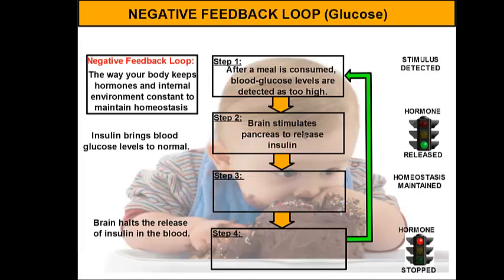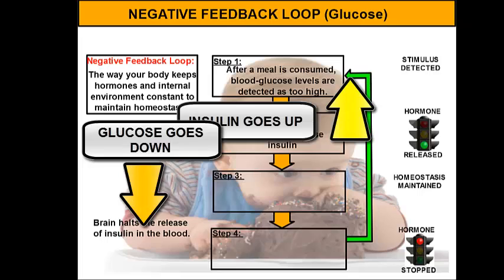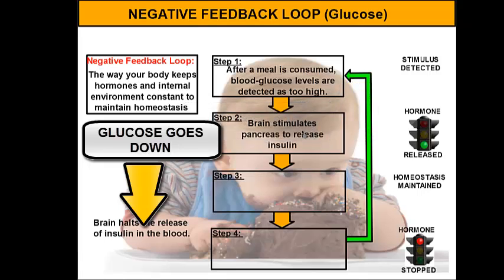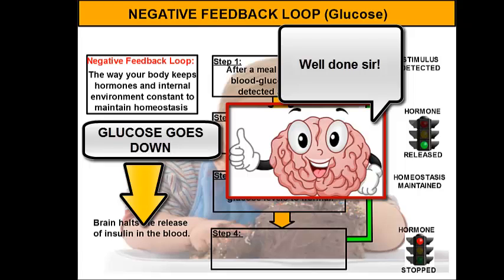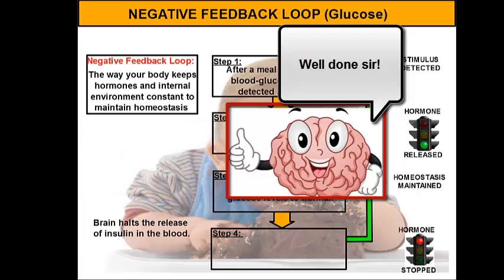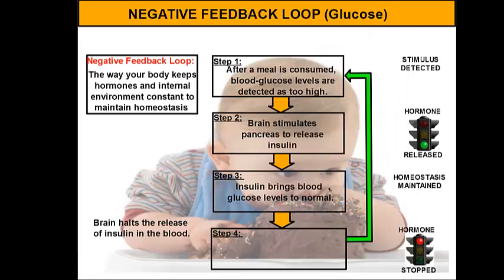Your cells can use the sugar to make energy. So as the sugar is rushing into your cells, the levels of sugar are now dropping in the blood — it's kind of like having a hallway full of people, and as everyone files into classrooms through doorways, the number of people decreases. As the glucose levels are dropping and getting close to normal, eventually we're going to get to the normal levels of glucose. So the insulin brings blood glucose levels back to normal, and now your brain is going to detect this and say, perfect — we don't need to release any more insulin because the glucose levels are balanced now.